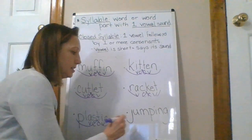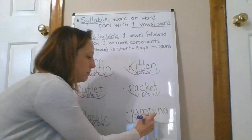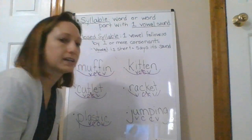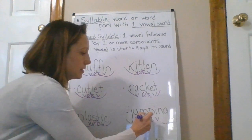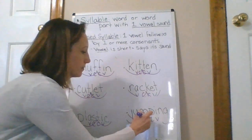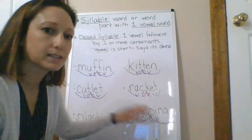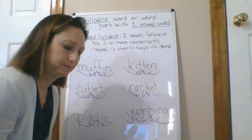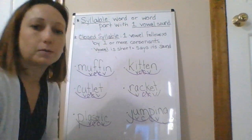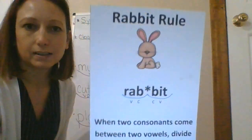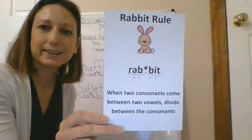Last example: the U is my first vowel, M is a consonant, P is a consonant, and I is a vowel. When two consonants come between two vowels, divide between the consonants. My first syllable is 'jump,' my second syllable is 'ping' — jumping. So we're looking for our first vowel and marking our vowels and consonants from there. What rule are we working on today? The rabbit rule: when two consonants come between two vowels, divide between the consonants.